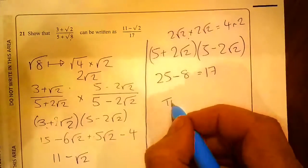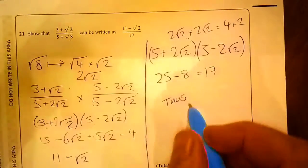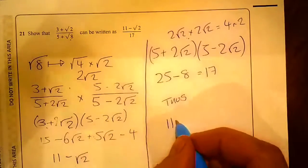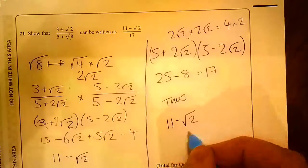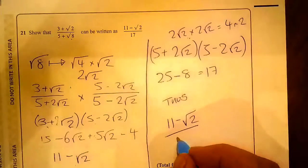So the numerator is 11 - √2, and the denominator is 17.